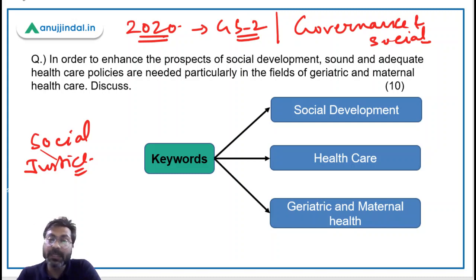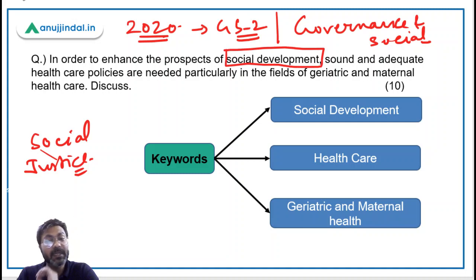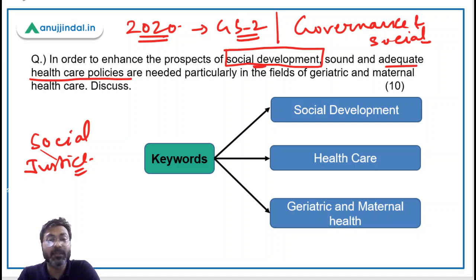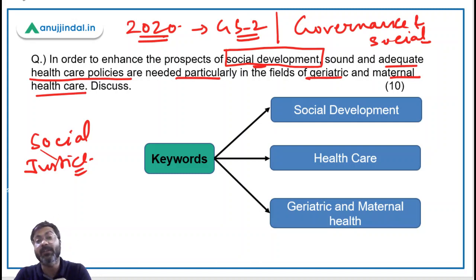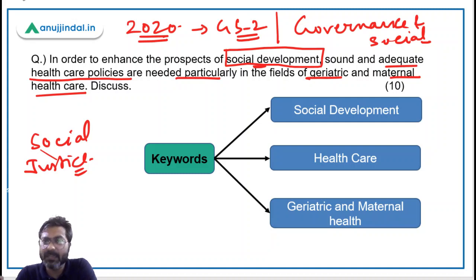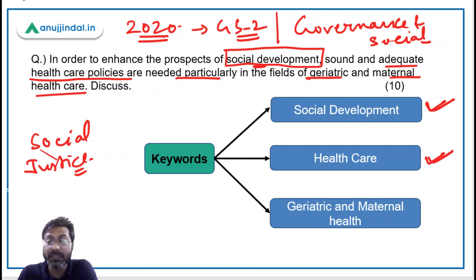Let's talk about the keywords. 'In order to enhance the prospects of social development' — so the first keyword is social development. 'Sound and adequate healthcare policies are needed' — so the second keyword is healthcare. 'Particularly in the fields of geriatric and maternal healthcare' — so the third keyword is geriatric and maternal healthcare. The keywords are very clear and there should be no difficulty identifying them.